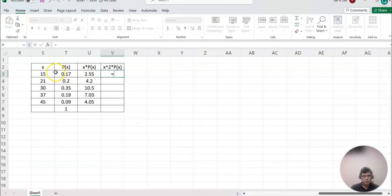Now, this means x squared times P(x). Go back and copy down.